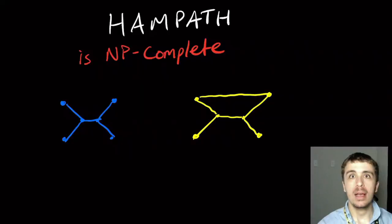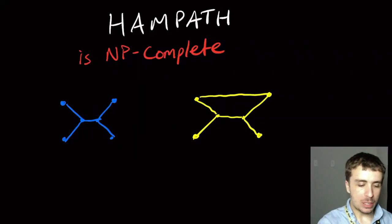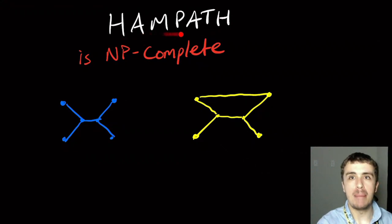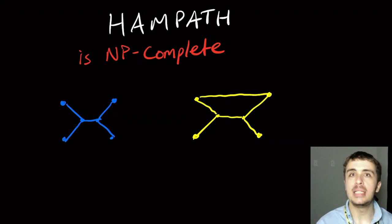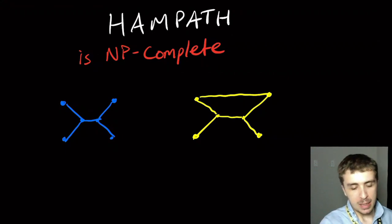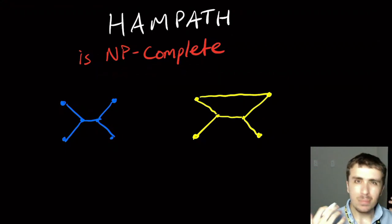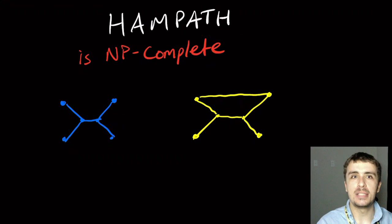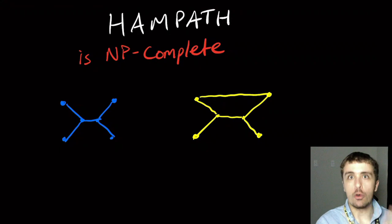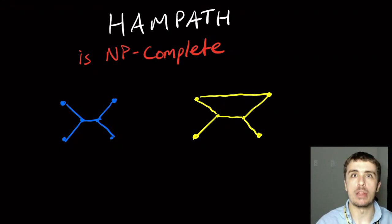I want to talk about the Hamiltonian path problem and showing that it's NP-complete. This problem is of great interest in computer science and about trying to understand the structure of graphs. This result will tell you that in terms of Hamiltonian paths, there's very likely not going to be a very easy-to-understand formulation of what a Hamiltonian path is in a graph and how to actually determine whether there is one.